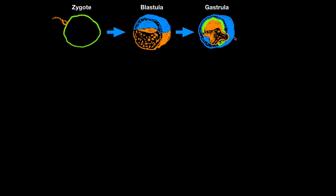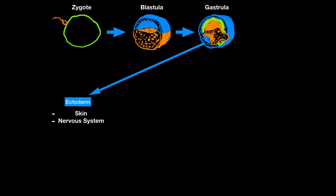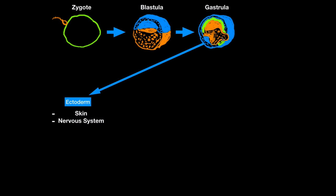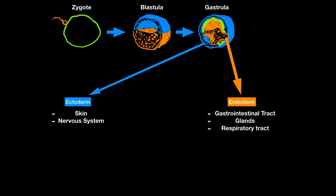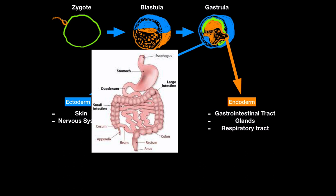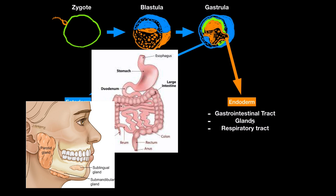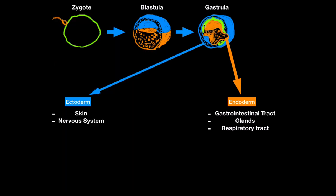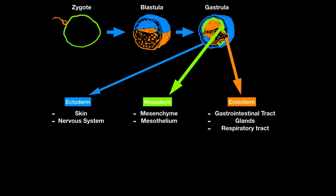The outer blue layer is called the ectoderm, which eventually forms things like the skin and nervous system. The inner orange layer is the endoderm, from which the GI tract, different glands, and respiratory structures like the trachea, bronchi, and alveoli develop. The middle green layer is the mesoderm, which forms things like the mesenchyme and the mesothelium — a membrane of simple squamous epithelium that develops into several body cavities.